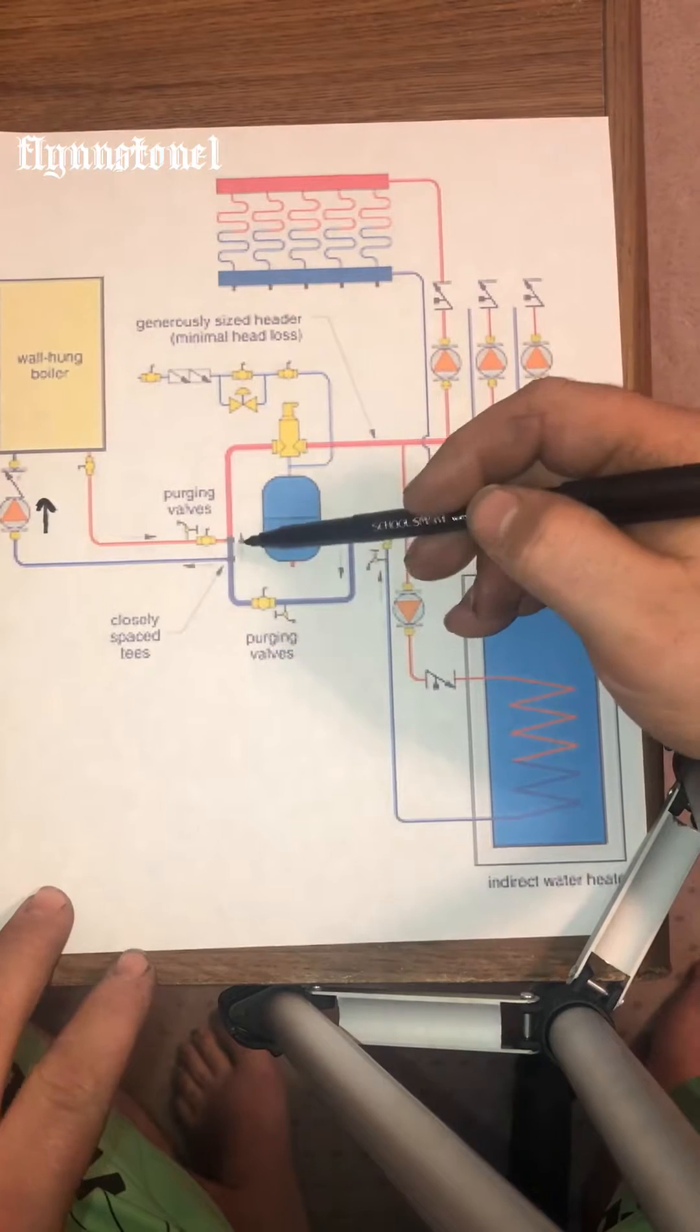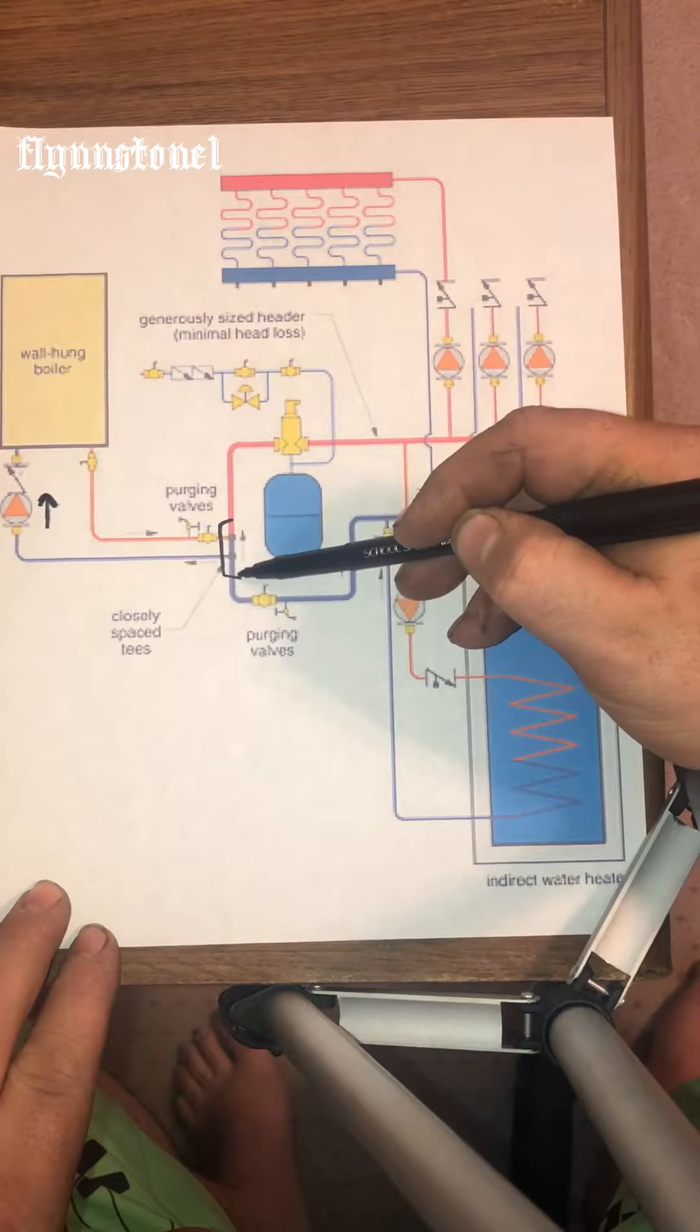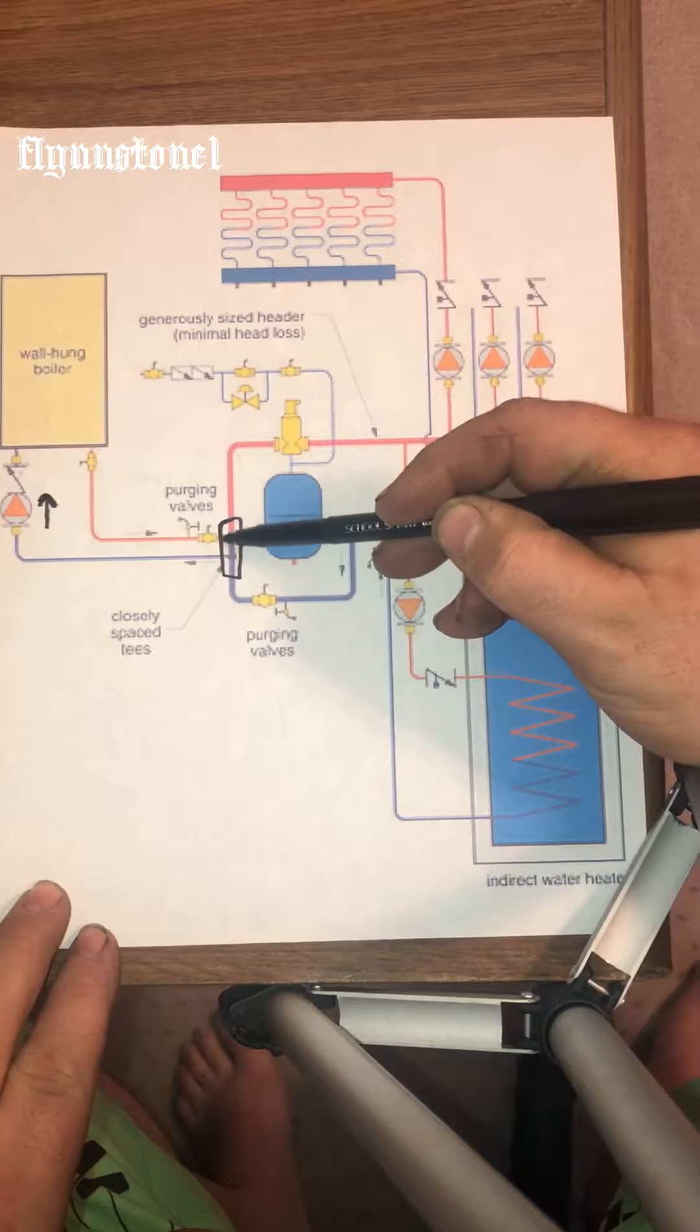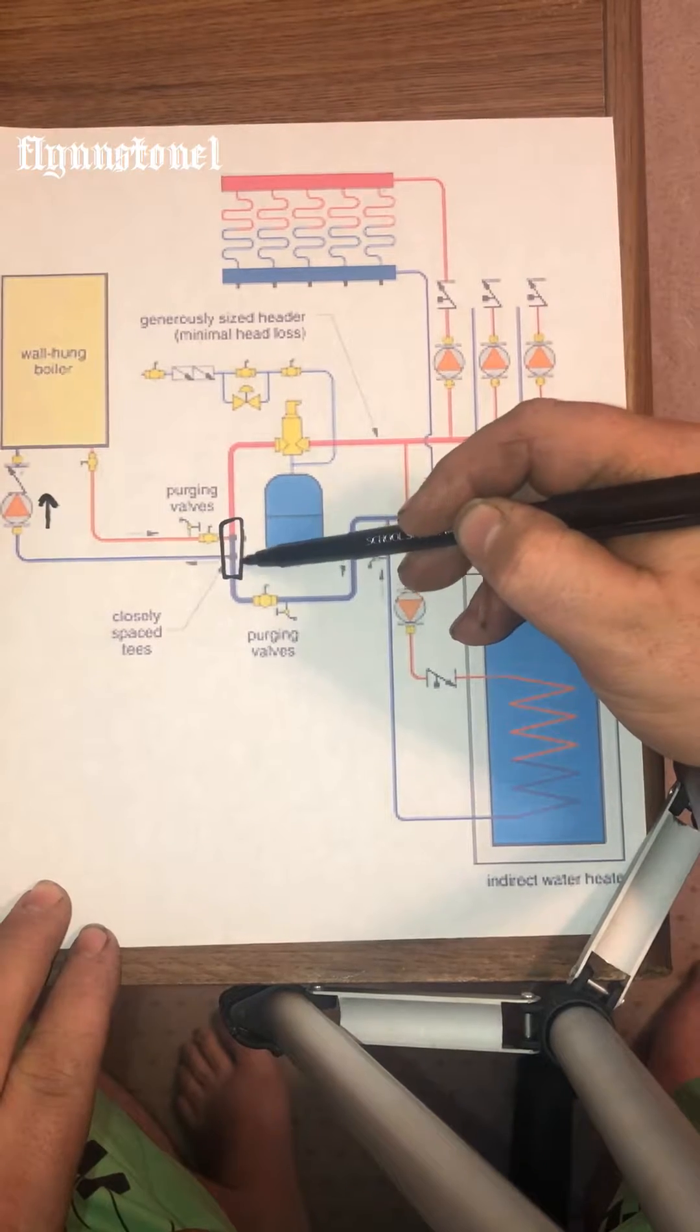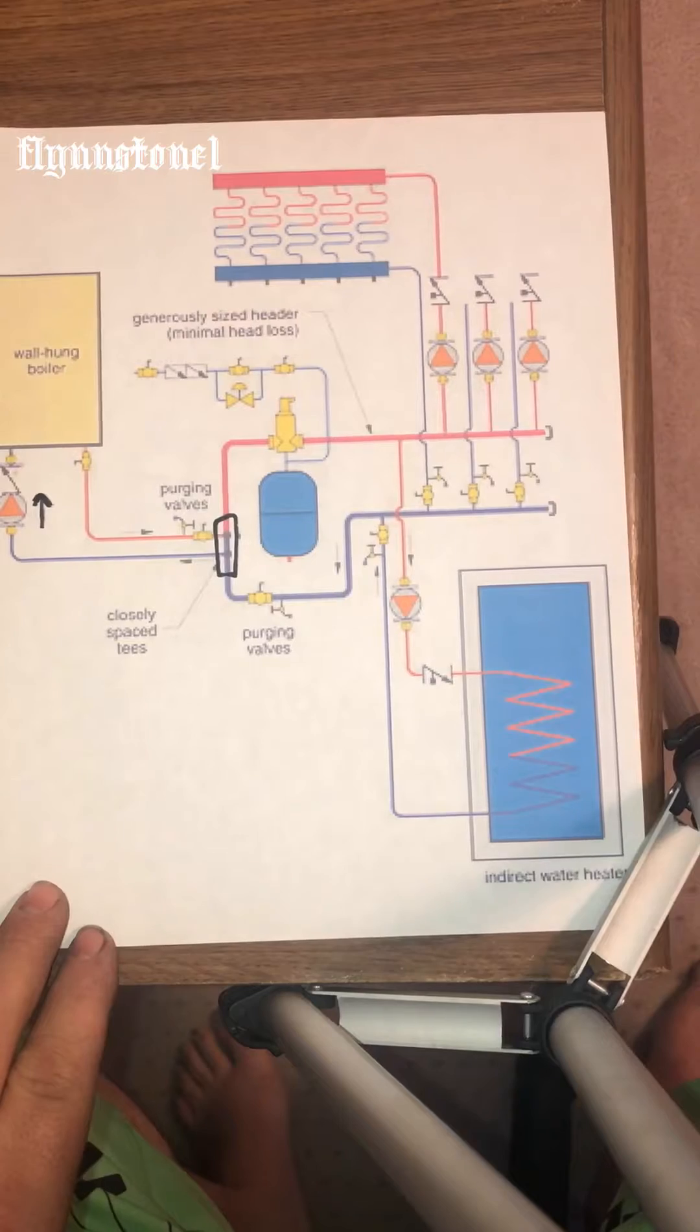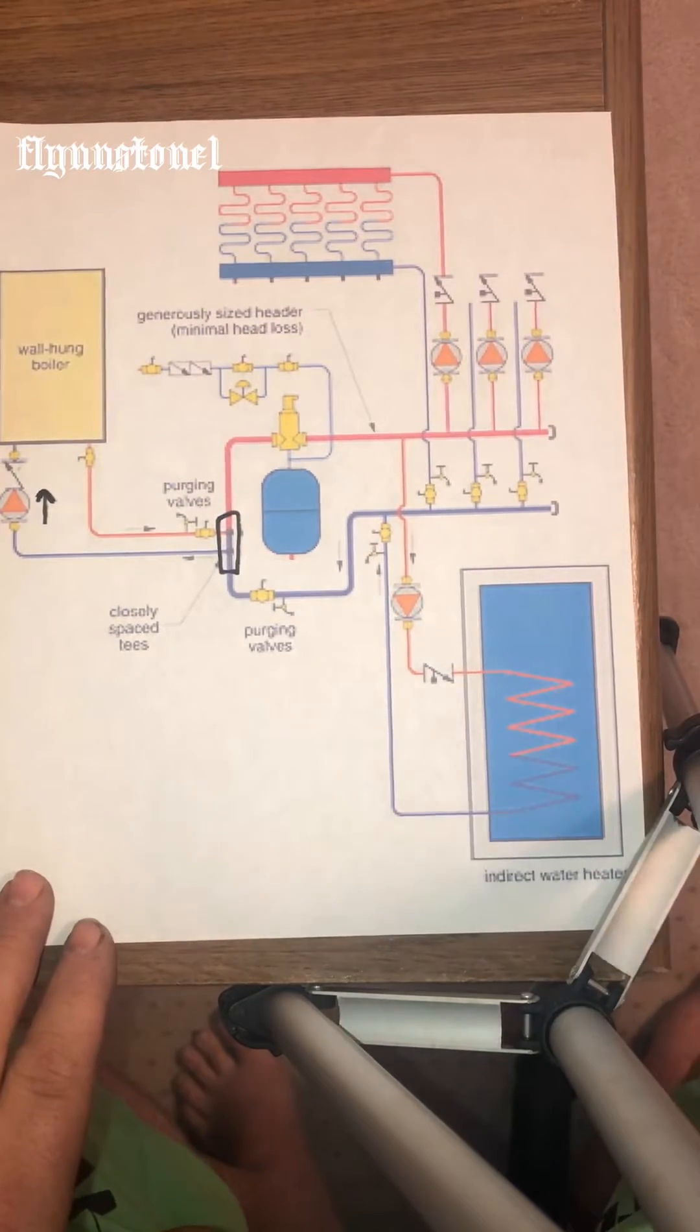Next you have your closely spaced T's and this is four times the diameter of the pipe max. Cannot go more.